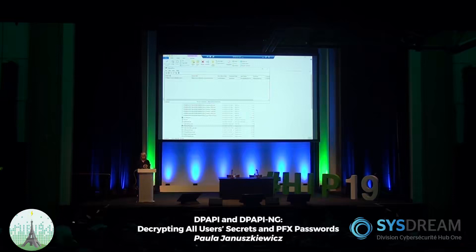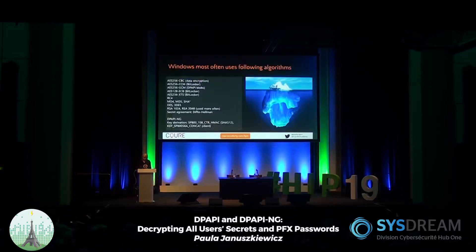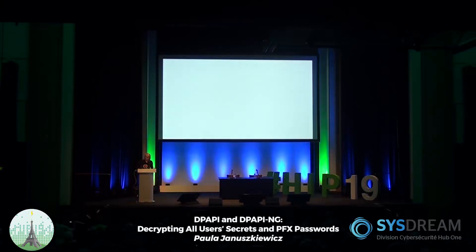Let me explain different things related to the Data Protection API and how it actually works. I'm going to explain one simple thing about how we reach our secrets — I'm not very good at painting, but let's do a little diagram about how the domain user reaches its secrets.